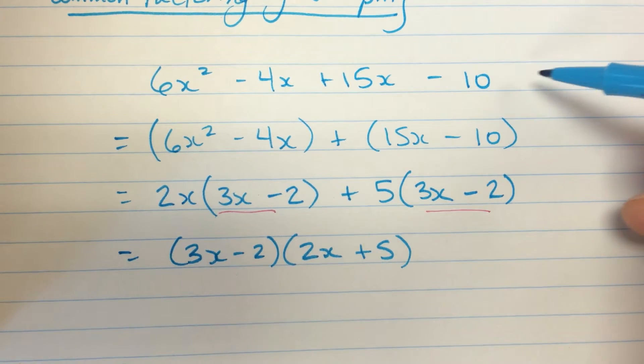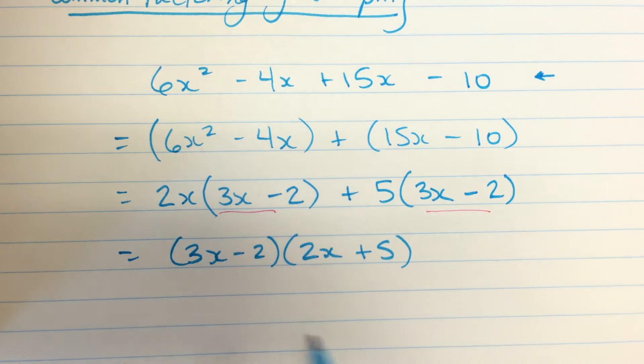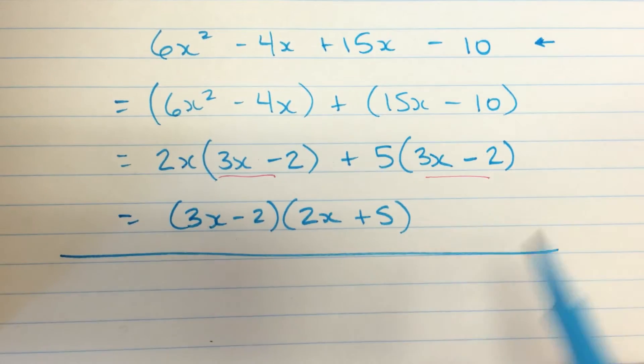So by carefully crafting this, I'm able to group, factor in two pieces, and then factor again using that common binomial factor. What if I had done this in a different order, though?